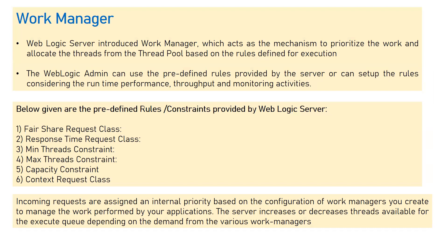WebLogic server introduced Work Manager as a mechanism to prioritize work and allocate threads from the thread pool based on rules defined for execution. If you want to give more priority to some applications or less to others, and you know there is a limit to the self-tuning thread pool, you can assign a certain number of threads to application A, some to application B, and a percentage to application C using Work Manager configurations.